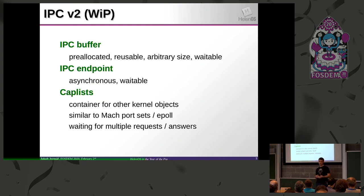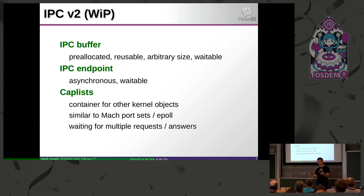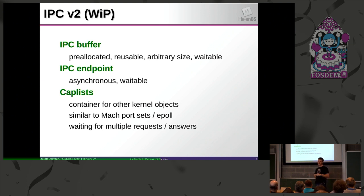IPC version 2 is centered around some new kernel objects. Specifically, an IPC buffer, which is pre-allocated by the user — you get a capability to an arbitrarily large piece of memory that is reusable, not thrown away after first use. In IPC you basically only pass this capability to this buffer. Then there is the IPC endpoint, which is a replacement for the answer box — you can have as many as you like. The third kind of kernel object is a cap list, which is a container for capabilities, similar to Mach's port sets. It allows you to have a capability to a kernel object into which you put stuff, and then refer to that set of objects by one capability.